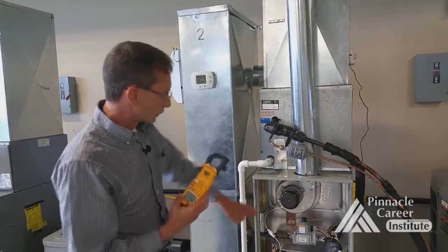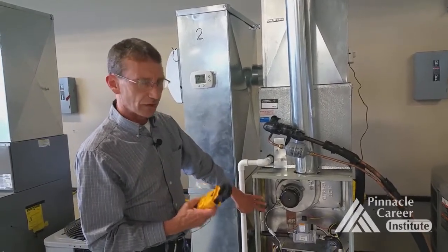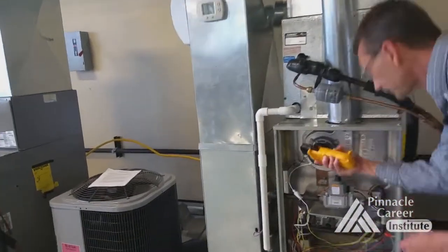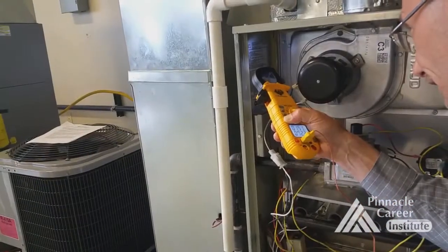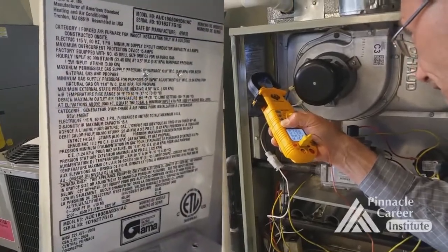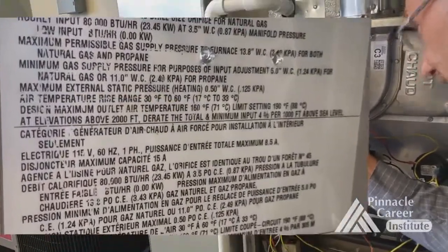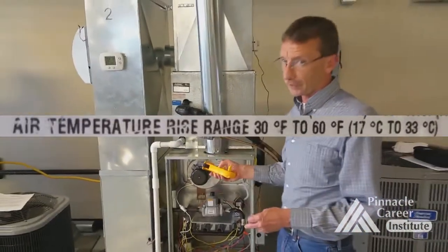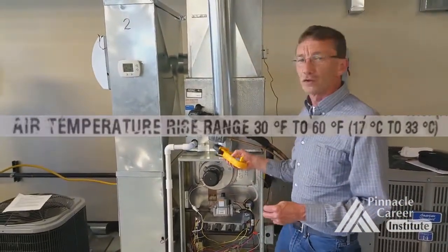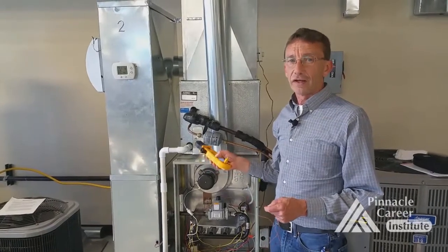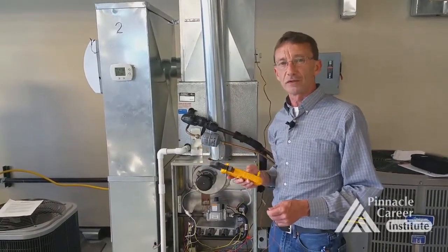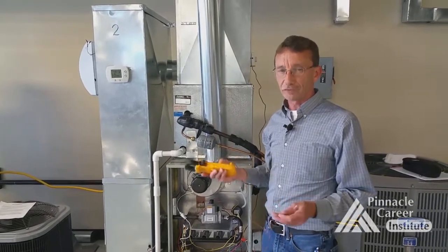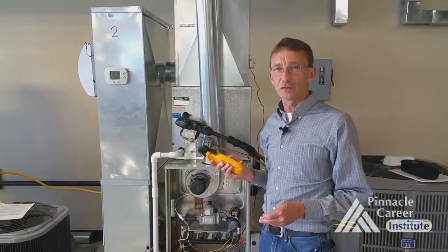Now what we want to do is check the temperature rise on the nameplate. This says 30 to 60 degree temperature rise across the heat exchanger. So we know that we're within range, and we will take these numbers, plug them in the formula, and determine the amount of CFM, cubic feet of air per minute, moving through this furnace.